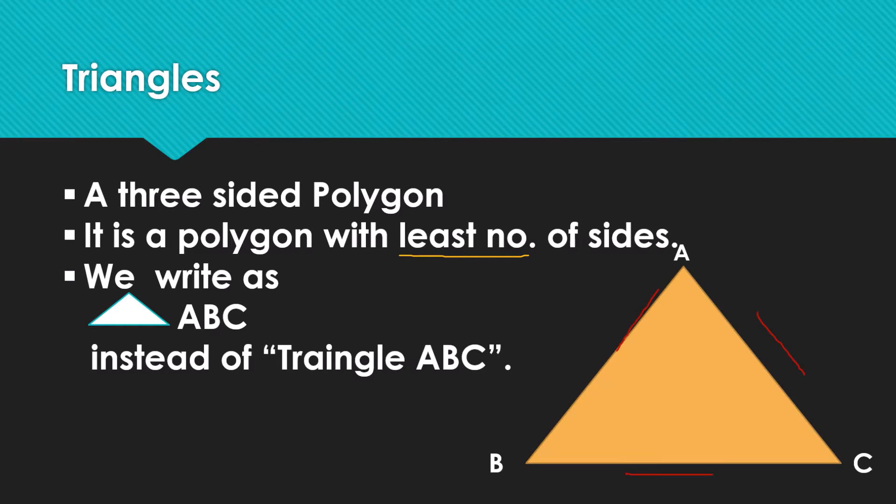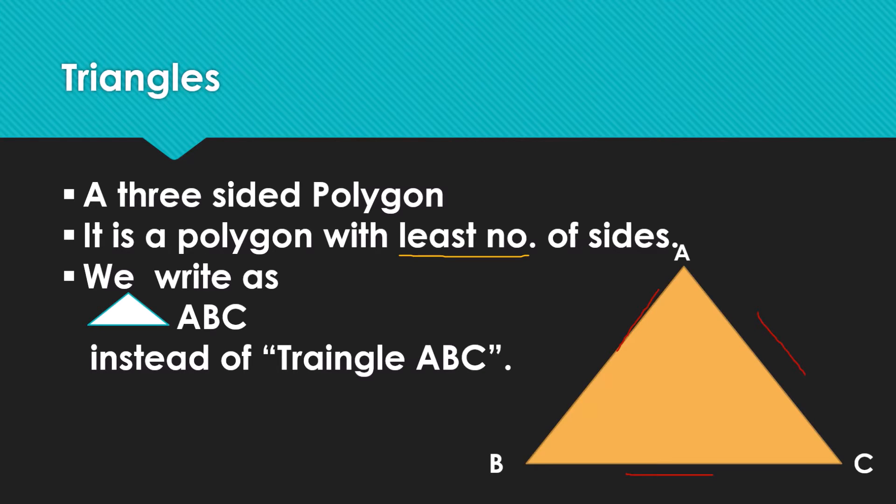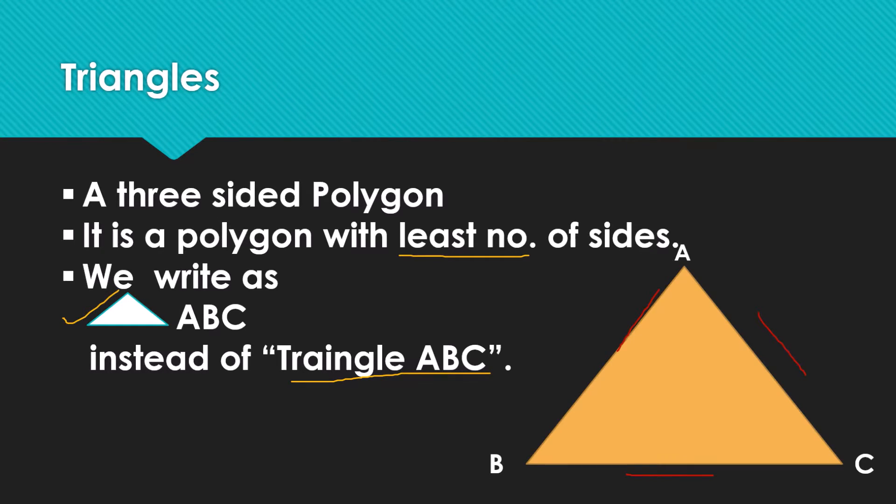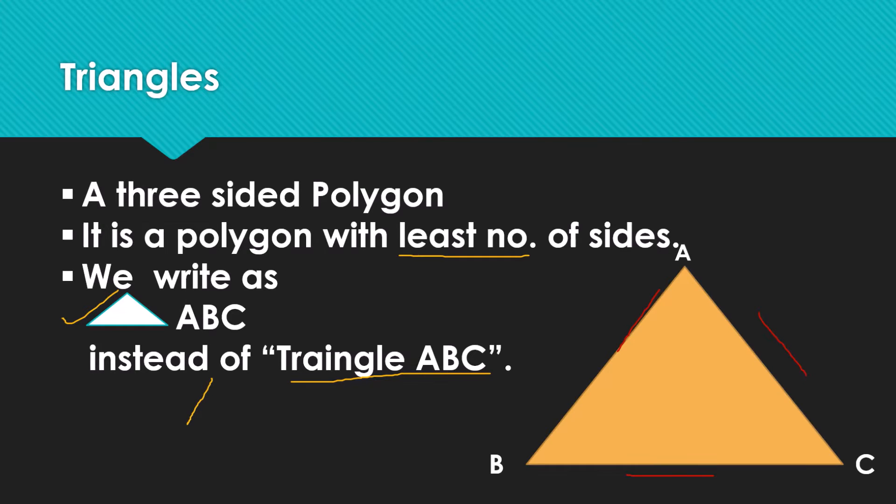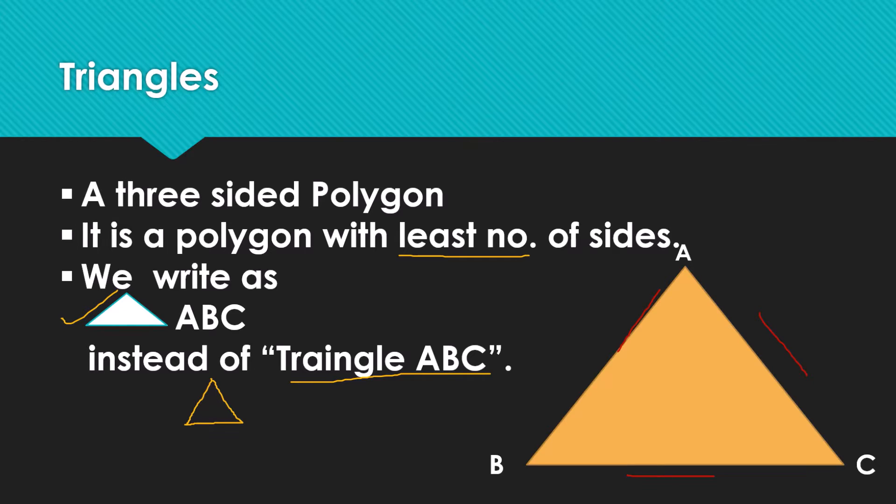We will not write 'triangle ABC' with the word 'triangle.' Instead, we use this symbol: triangle ABC. This is the symbol for triangles. We will use this triangle symbol to represent a triangle, whether it is triangle ABC or whatever name like XYZ.